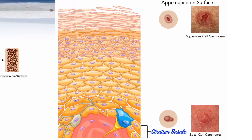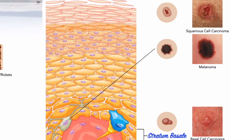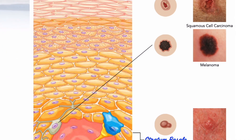Compared with these common and seldom life-threatening cancers, malignant melanomas are extremely dangerous. In this condition, cancerous melanocytes grow rapidly and metastasize through the lymphatic system. A melanoma usually begins from a mole but may appear anywhere in the body. The outlook for long-term survival depends on when the condition is detected and treated.